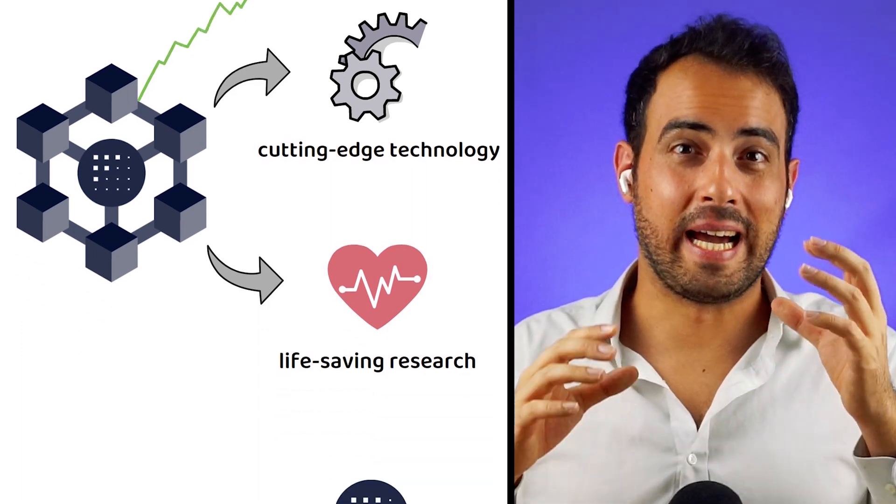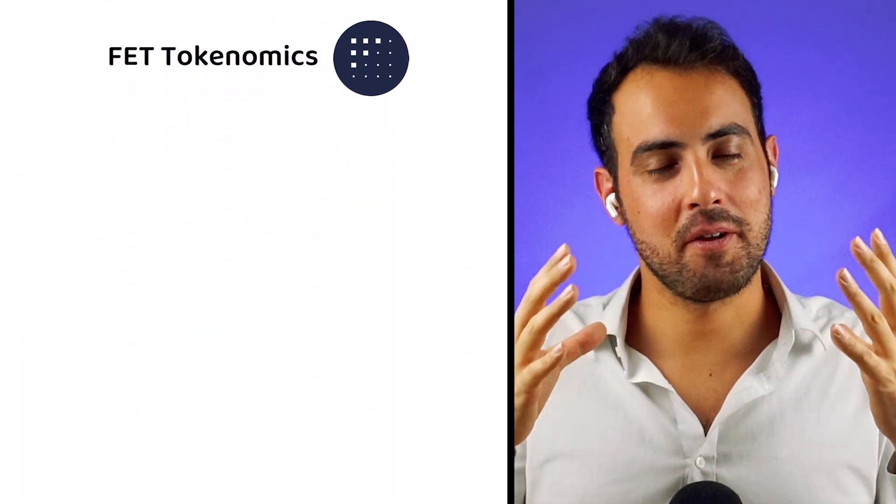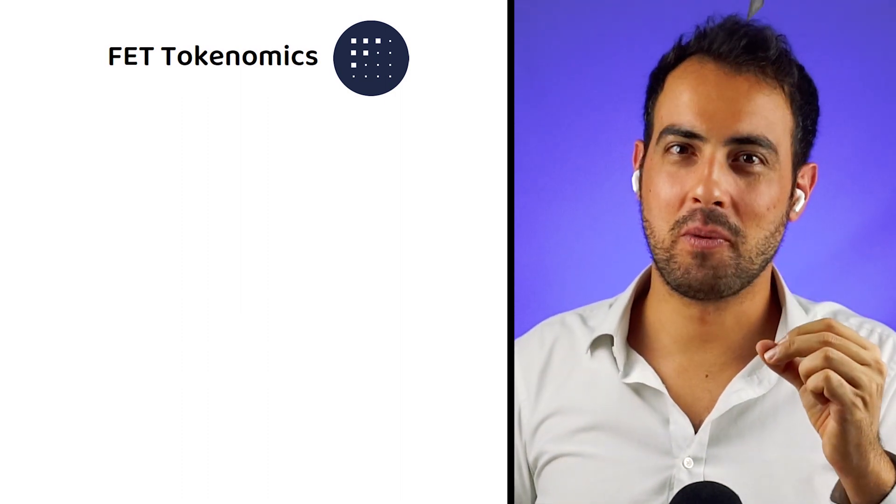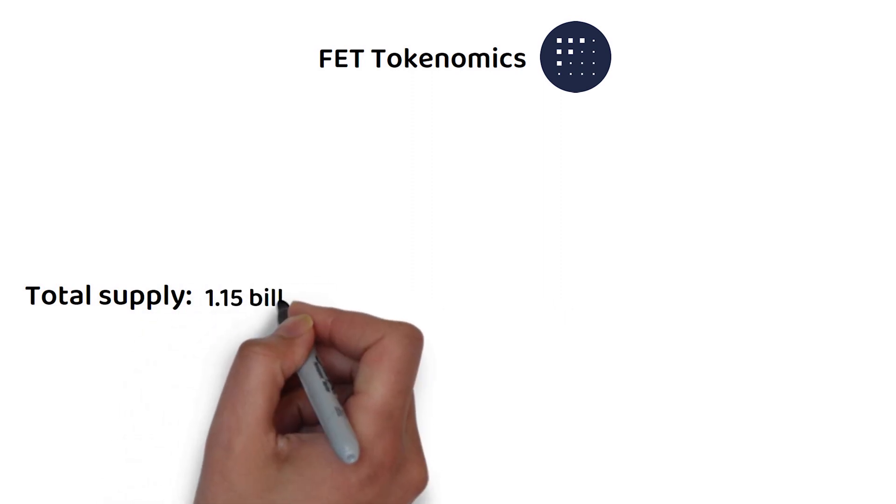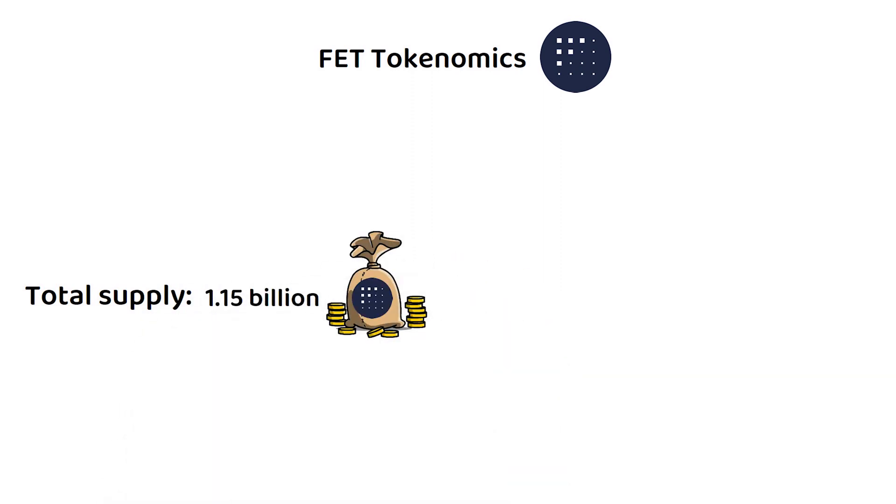But as we all know, crypto projects live and die by their tokenomics. So let's now explore the FET tokenomics. In total, there will only ever be 1.15 billion FET tokens. Originally, these were released as ERC20 tokens on the Ethereum network when they launched back in 2019.